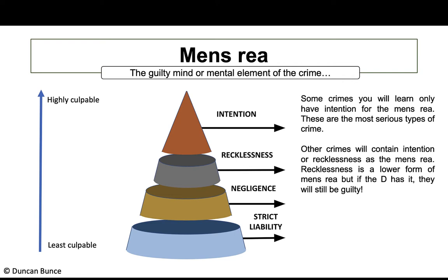A prime example of a specific intent offence is murder — intent to kill or cause serious harm. Theft is another example: the intention to permanently deprive the other of the property. Below that we have recklessness. Many crimes can be committed intentionally or recklessly; if recklessness is in the mens rea, we call that a basic intent offence, which is less serious than specific intent offences.